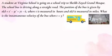A student at Virginia School is going on a school trip to Sheikh Zayed Grand Mosque. The school bus is driving along a straight road. The position of the bus is given by s(t) = t³ - 3t² + 7t - 6, where t is measured in hours and s(t) is measured in miles. What's the instantaneous velocity of the bus when t equals 3?